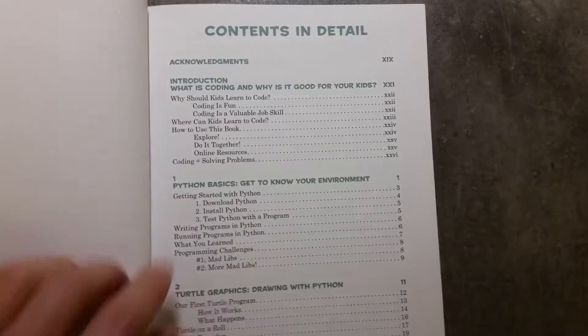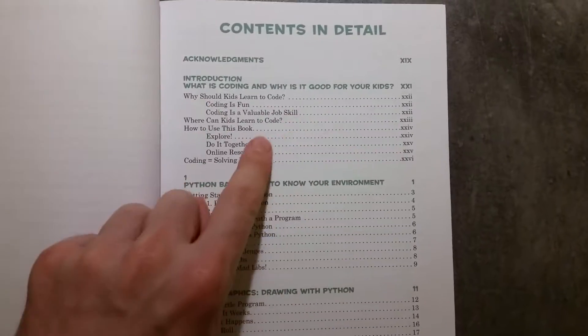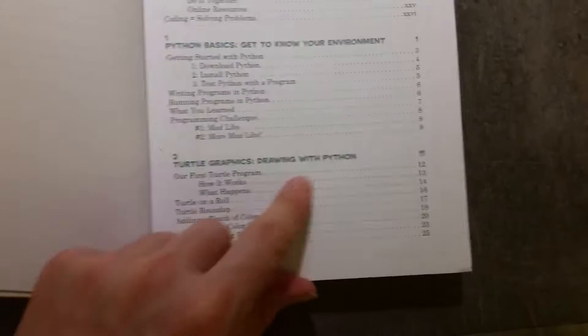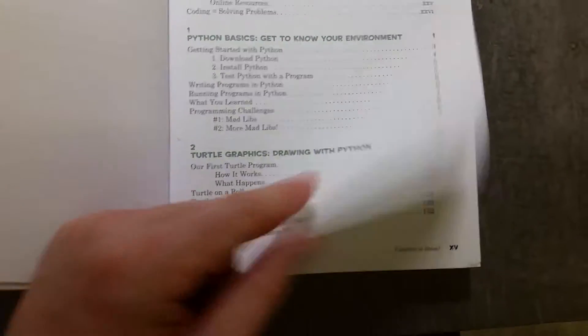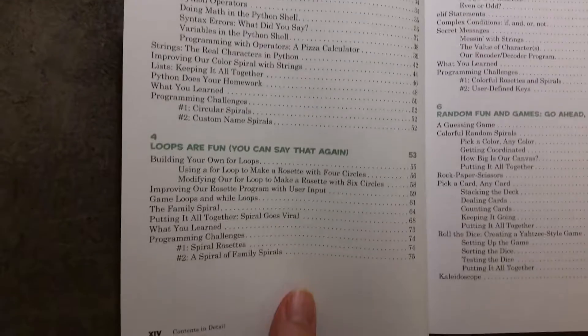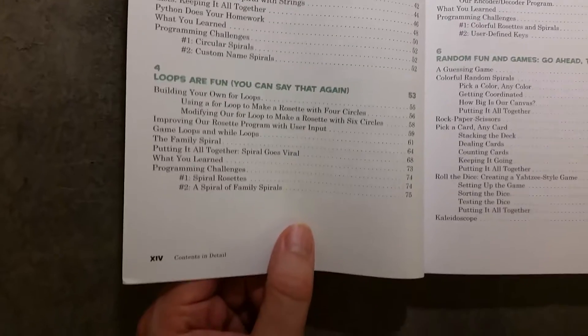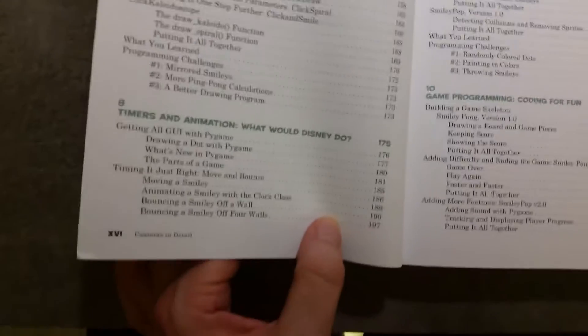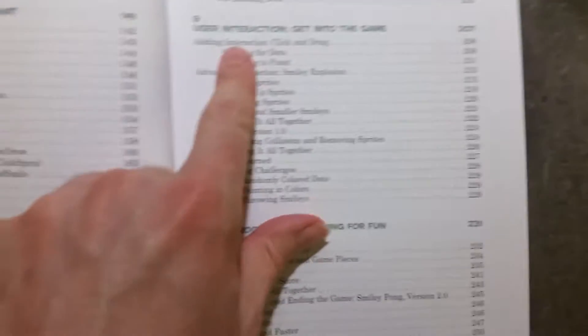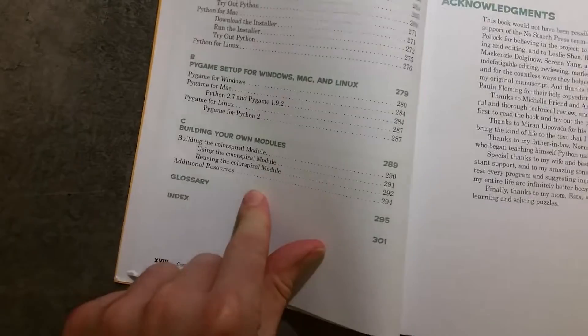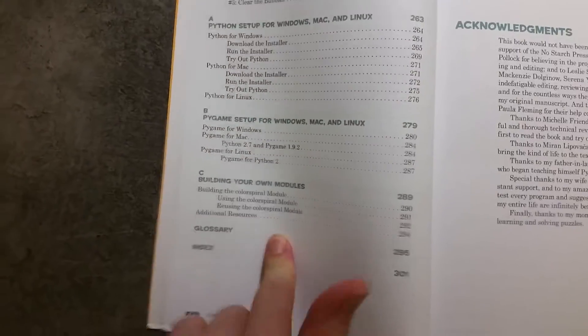Let's have a look at the contents then. Introduction: What is coding and why is it good for your kids? Python basics, getting to know your environment. Turtle graphics, drawing with Python. Numbers, variables, Python does the math. Loops are fun, conditions, random fun and games and challenges, functions, timers, animation, user interaction, game programming, and then various ways of setting up Python on your machine.